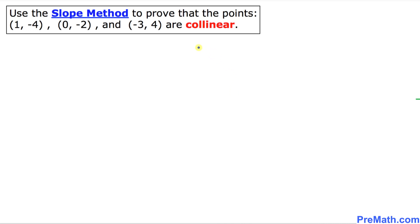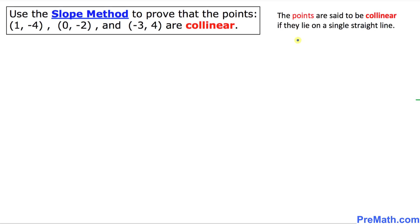Welcome to PreMath. In this video tutorial, we are going to use the slope method to prove that these three given points are collinear. So the points are said to be collinear if they lie on a single straight line.